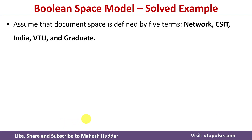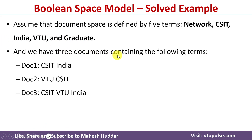Let's take an example to understand the boolean space model. Assume that the document space is defined by five terms: network, csit, india, vtu, and graduate. We have three documents containing the following terms: Document 1 contains csit and india. Document 2 contains vtu and csit. Document 3 contains csit, vtu, and india.